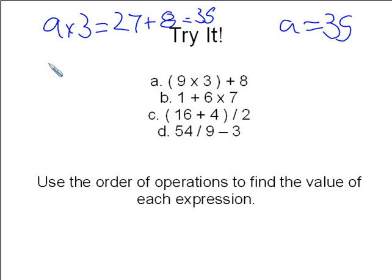1 plus 6 times 7. There are no parentheses, so multiply from left to right. 1 plus 6 times 7 is 42, so 1 plus 42 equals 43. So B equals 43.